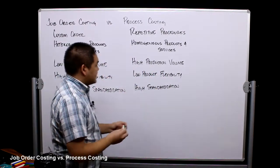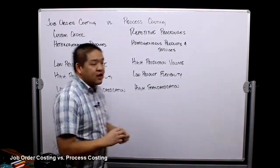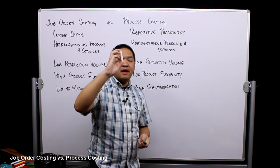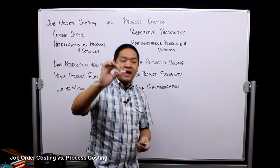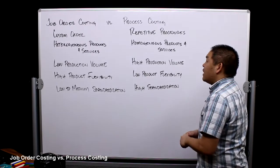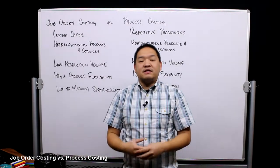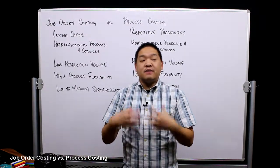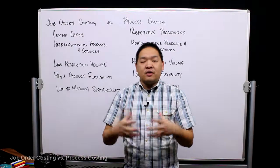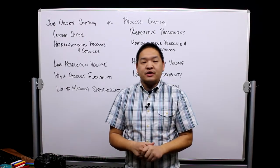Process costing also features low product flexibility and high standardization. There's a standard set way: we know that putting this Lego through the process will produce a specific length using a specific amount of plastic. So those are the two costing methods. If items are very different, specialized, and low volume, we use job order costing. If it's high volume, homogeneous, and a repetitive process — the same things over and over — we use process costing.